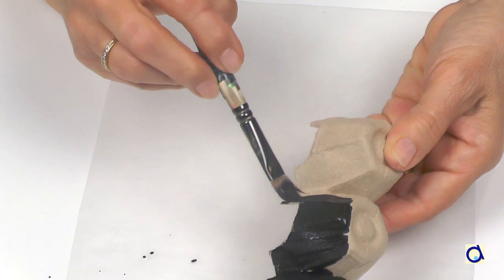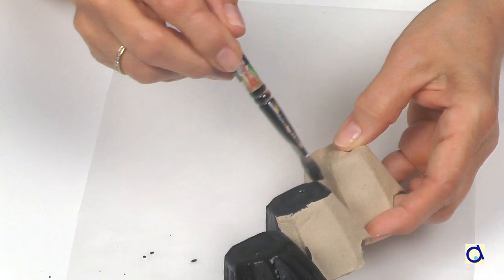Paint the ant black. If necessary, add a second coat of paint.